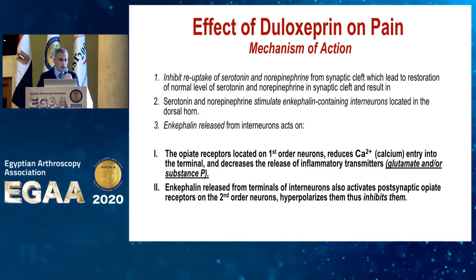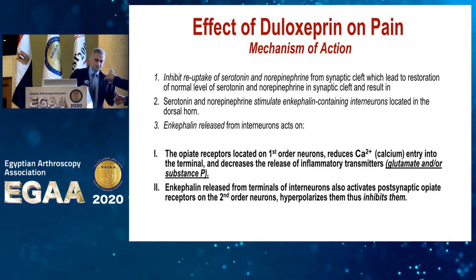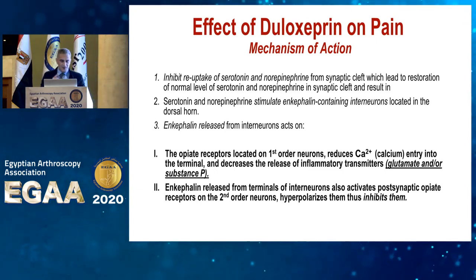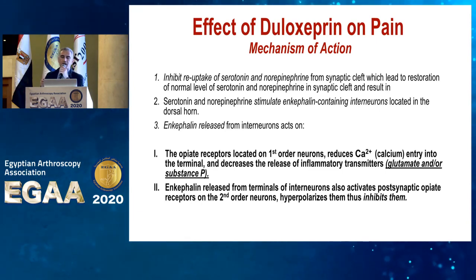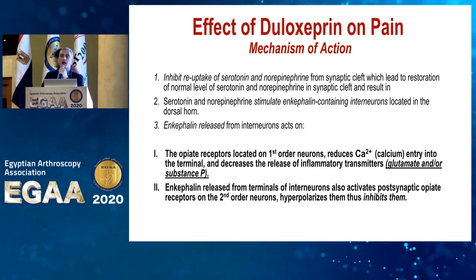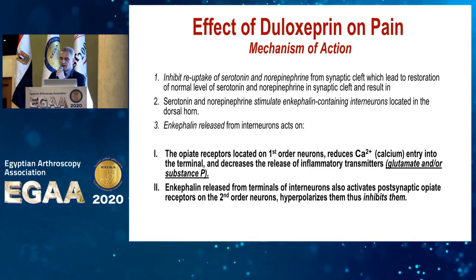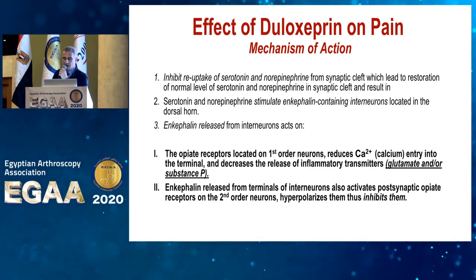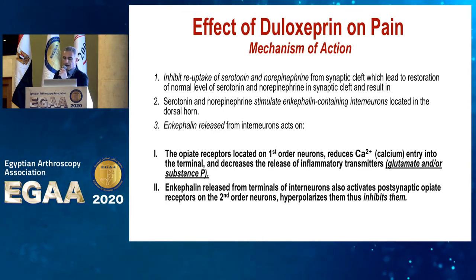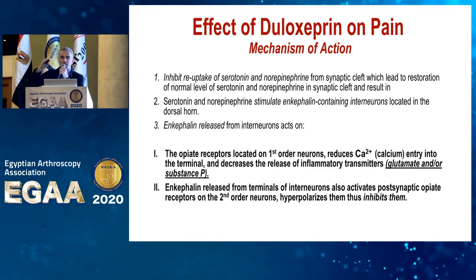What is the effect of duloxetine? Duloxetine works by inhibiting the reuptake of serotonin as well as norepinephrine. Without going into too much detail, this affects first-order neurons as well as second-order neurons, and it blocks the pain at different levels of the pain cycle instead of just focusing on one level.